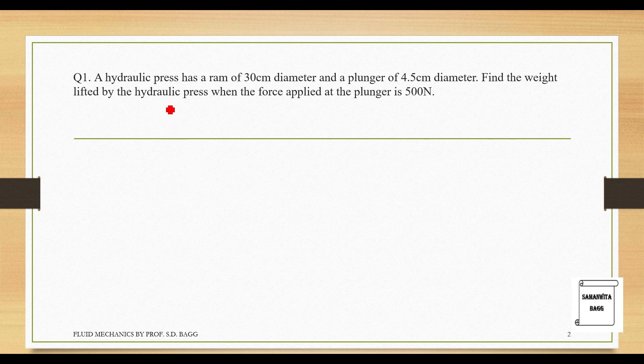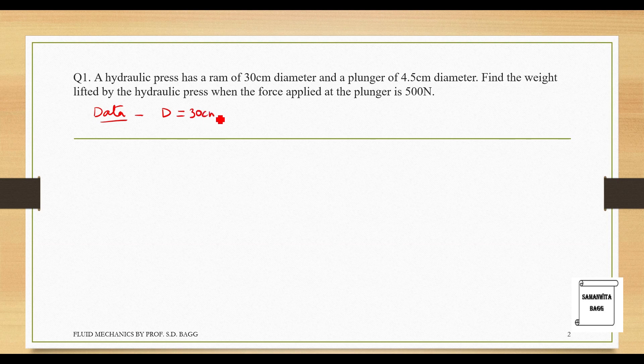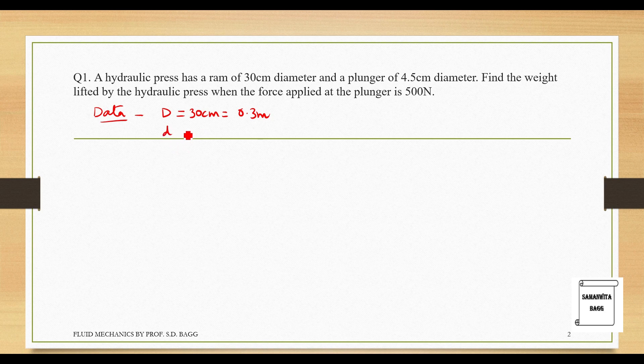A hydraulic press has a ram of 30 cm diameter. So, the first data given is the diameter of the ram. Let me take this as D equals 30 cm, that is 0.3 m, and the plunger diameter, let me take this as d, it is 4.5 cm, that is 0.045 m. You should divide by 100 when you are converting cm to m.